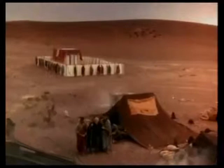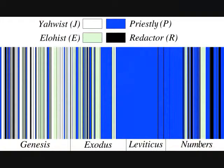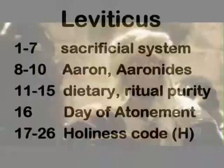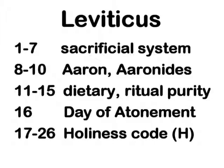The priestly materials are found as a block in Leviticus, a large part of Numbers, and then scattered throughout Genesis and Exodus. Because of these common themes, we say they were produced by a priestly school — we hypothesize a priestly school. These materials emerged over a period of centuries and reached their final form in the exilic or post-exilic period, but they certainly often preserve older cultic and priestly traditions as well.